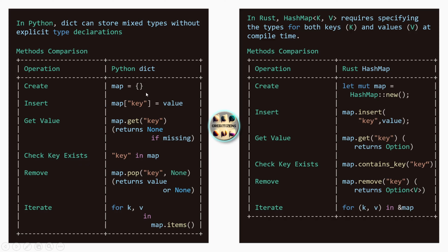In Rust, to create a hash map we use HashMap::new, like for strings or vectors. To insert we use insert, get to retrieve a value, contains_key to check if a key exists, and remove. The variable 'map' is the name of the hash map and it's mutable so we can do all those operations. Those are the Python equivalents — you can pause the video and read it.